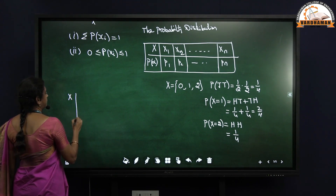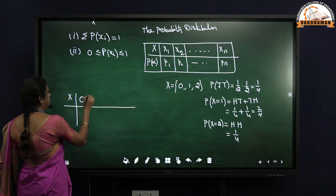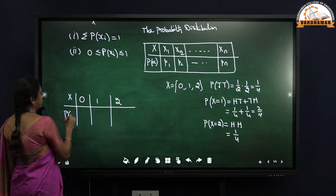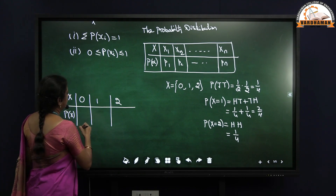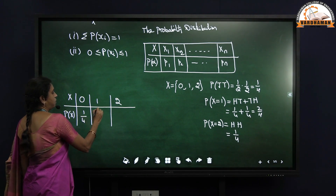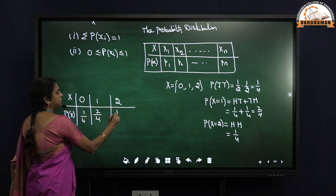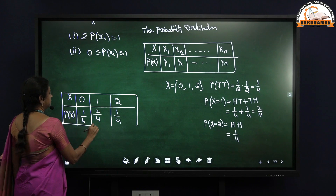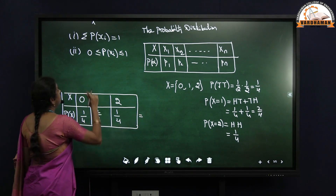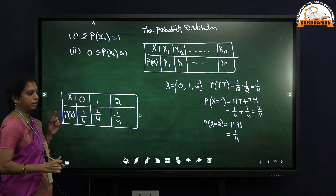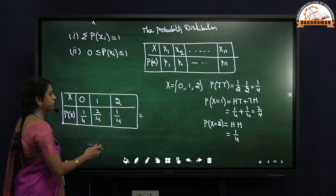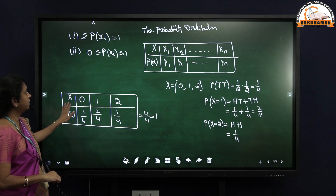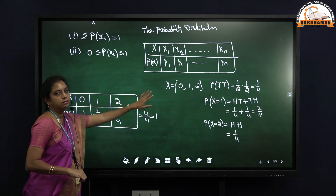The X values are 0, 1, and 2. The corresponding probability values are: when X = 0, probability = 1/4; when X = 1, probability = 2/4; when X = 2, probability = 1/4. As per the condition, the sum of probability values should equal 1. So 1/4 + 2/4 + 1/4 = 4/4 = 1. This is how we write the probability distribution for the random variable.